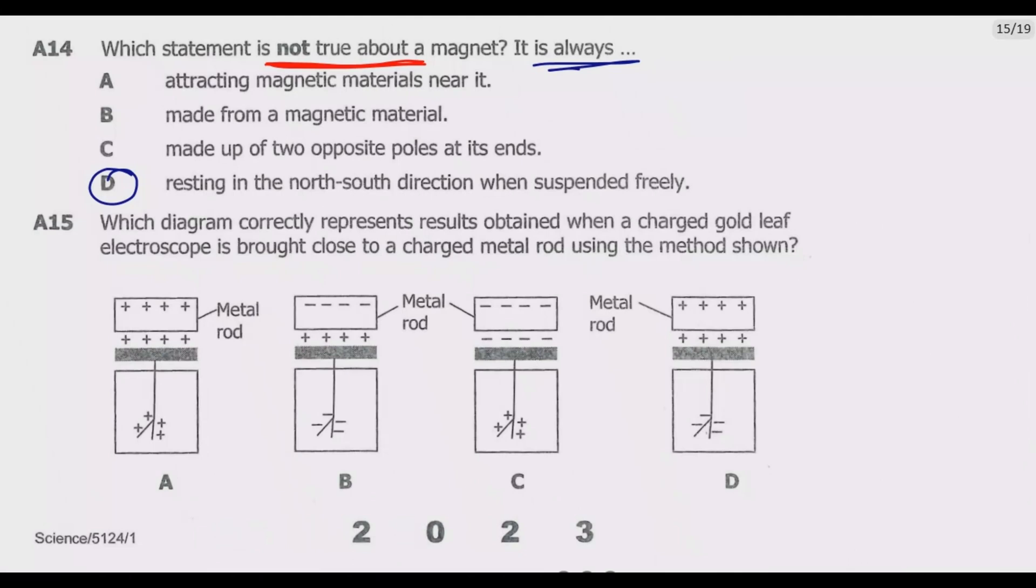Question A15: Which diagram correctly represents results obtained when a charged gold leaf electroscope is brought close to a charged metal rod using the method shown? So we are just bringing it close, not initiating contact. So the method is induction. We are inducing a charge.